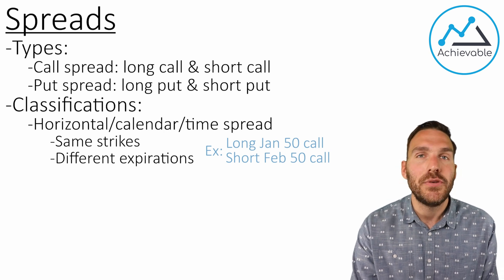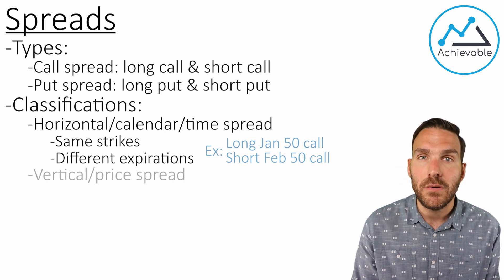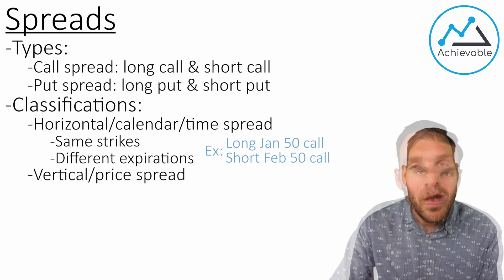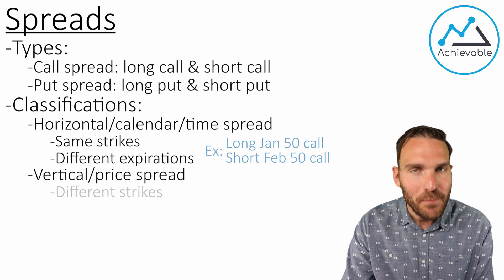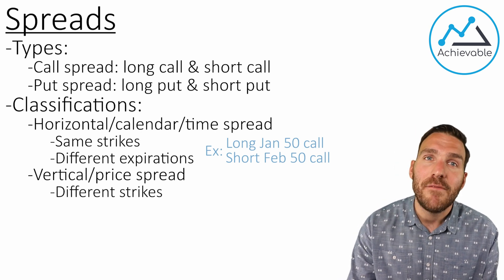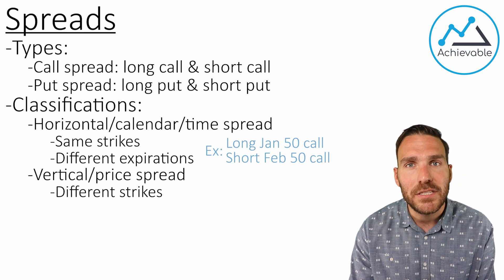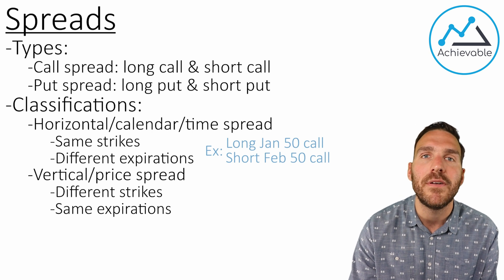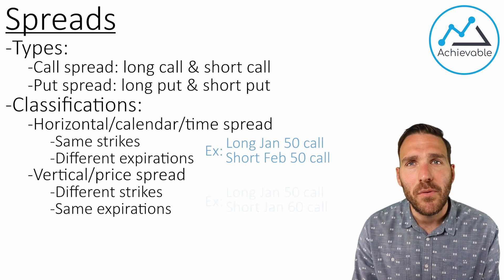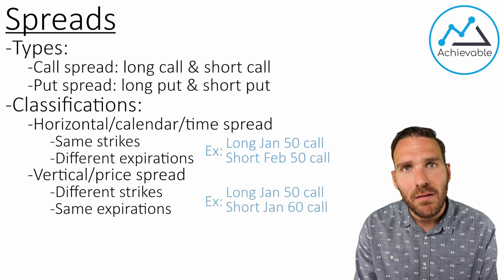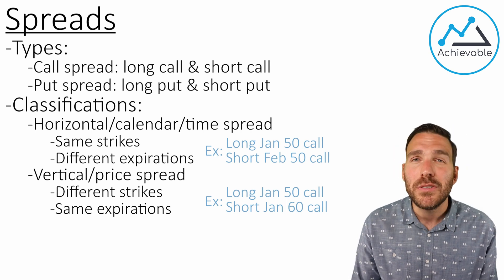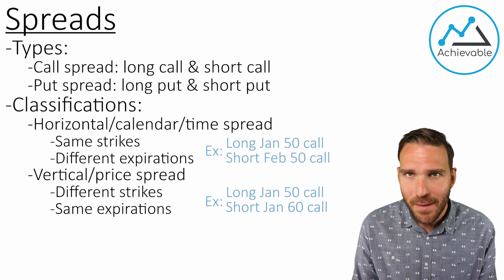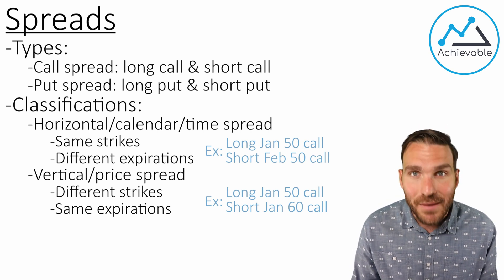The next classification has two names. We call this a vertical, also known as a price spread. As the term price spread might indicate, we're going to see a difference between the strike prices. A vertical, also known as a price spread, is where we see the same expirations across both options but different strike prices. For example, a long Jan 50 call and a short Jan 60 call. Most of your spread questions on the exam will actually be vertical, aka price spreads, so get used to these — you're going to see a lot of them.